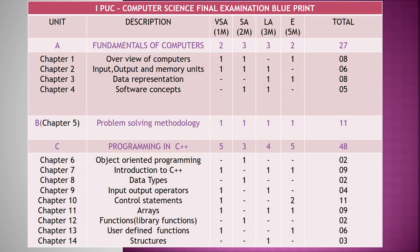The chapters in Unit C are: Chapter six — Object Oriented Programming with one three-mark question; Chapter seven — Introduction to C++; Chapter eight — Data Types; Chapter nine — Input Output Operators; Chapter ten — Control Statements; Chapter eleven — Arrays; Chapter twelve — Functions; Chapter thirteen — User Defined Functions; and Chapter fourteen — Structures. The overall weightage of Unit C is 48 marks.